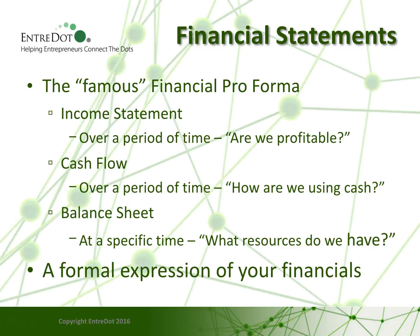The second is the cash flow statement, again over a period of time, showing how you are using cash and whether you might potentially run out. It's like a really fancy check register, helping you understand not only money you have but money still owed to you and money you have to pay out. The third is a balance sheet — an expression of what resources you have, what liabilities you have against those assets, and what your company is worth.